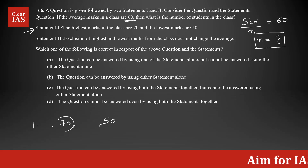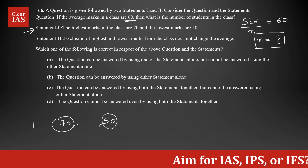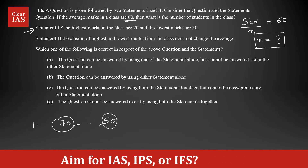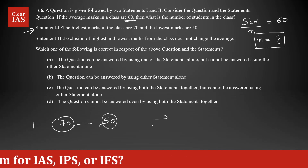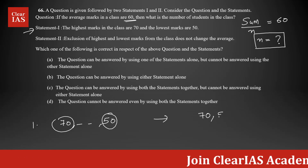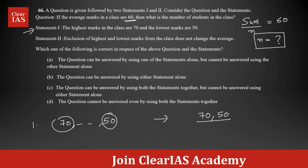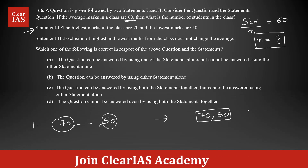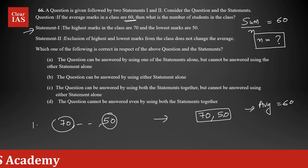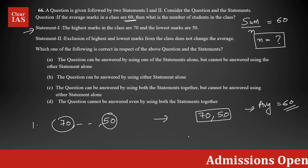I know the highest is 70 and the lowest is 50, but I don't know how many students are in between. For example, let's say there are only 2 people — one with 50 and one with 70. The average is going to be 60, because 70 plus 50 is 120 divided by 2 is 60.